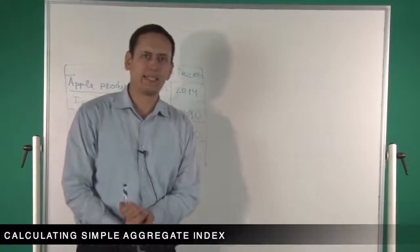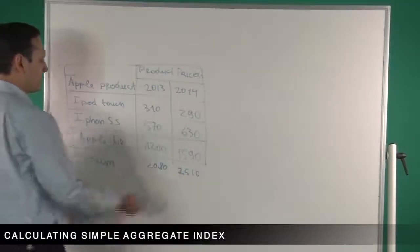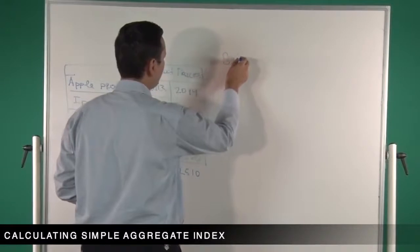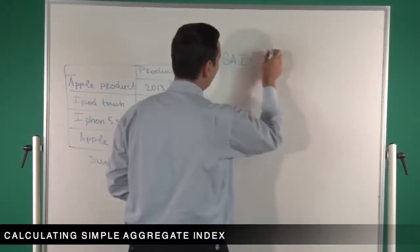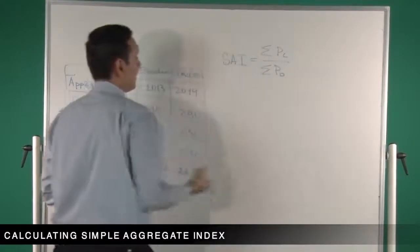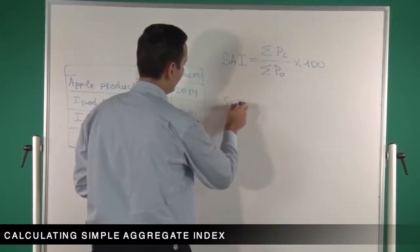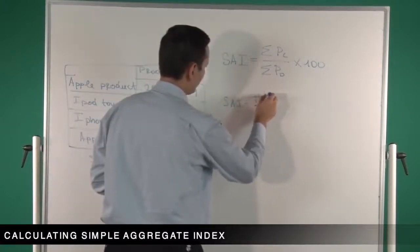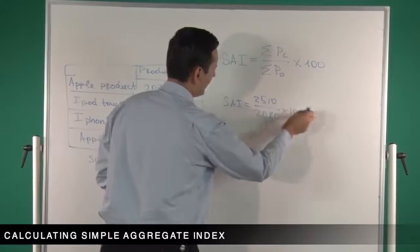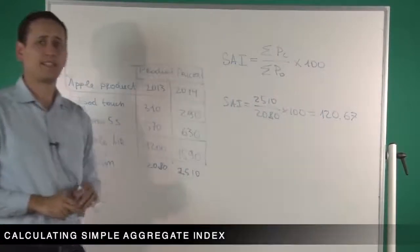Now let's consider simple aggregate index. We simply sum all items to get the totals, divide the sum of current prices by the sum of previous prices, and multiply by 100. The formula is the sum of PC divided by the sum of PO. In our case, it's 2,510 divided by 2,080 multiplied by 100, giving 120.67. This is the simple aggregate index.